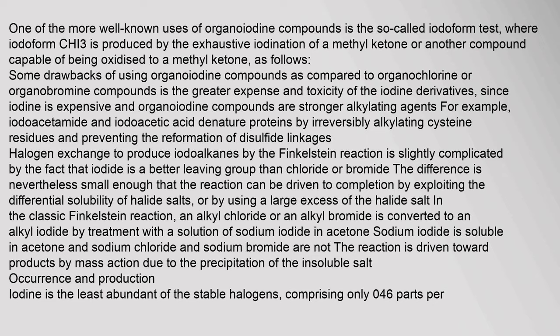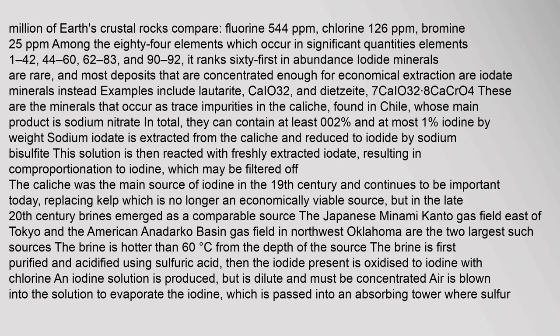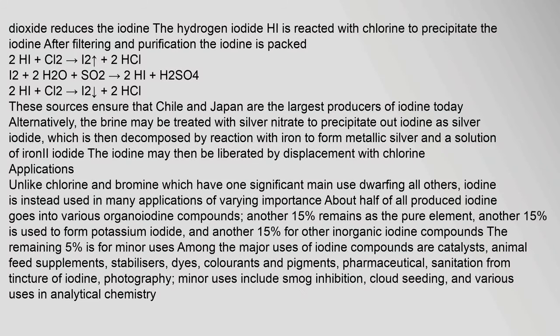Occurrence and Production: Iodine is the least abundant of the stable halogens, comprising only 0.46 ppm of Earth's crustal rocks. The hydrogen iodide (HI) produced in processing is reacted with chlorine to precipitate the iodine. After filtering and purification, the iodine is packed. These processes ensure that Chile and Japan are the largest producers of iodine today. Alternatively, the brine may be treated with silver nitrate to precipitate iodine as silver iodide, which is then decomposed by reaction with iron to form metallic silver and a solution of iron(II) iodide, and the iodine may then be liberated by displacement with chlorine.